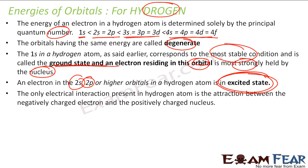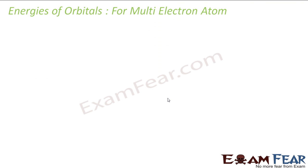The only electrical interaction in the hydrogen atom is between the negatively charged electron and the nucleus — that is, between the positive nucleus and the negative electron.